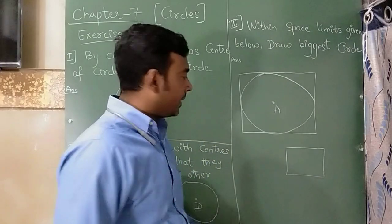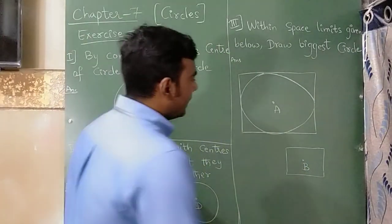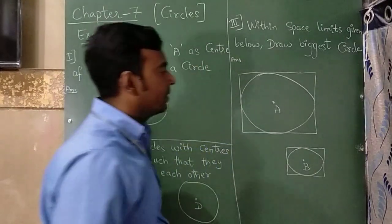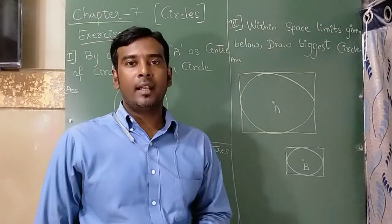If I consider this as a square and from here, exactly at the center, if I consider this as B, then I can draw the circle like this. This completes your exercise 7.1. Let us move on to the next exercise.